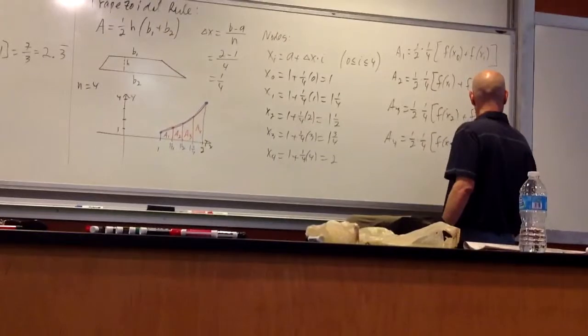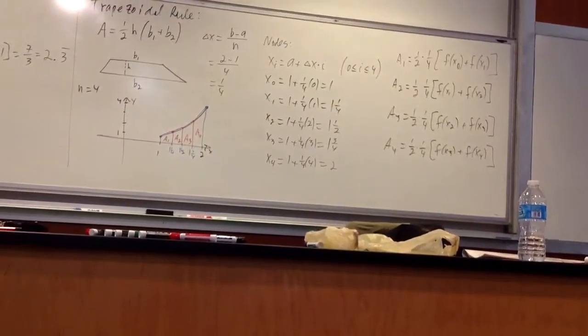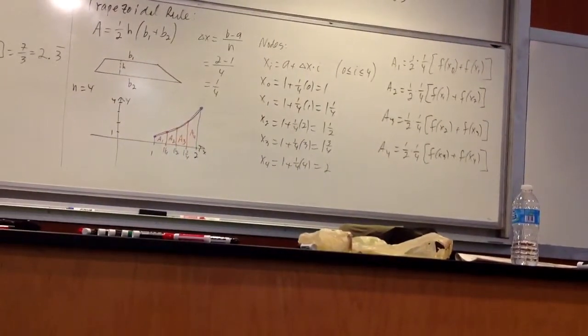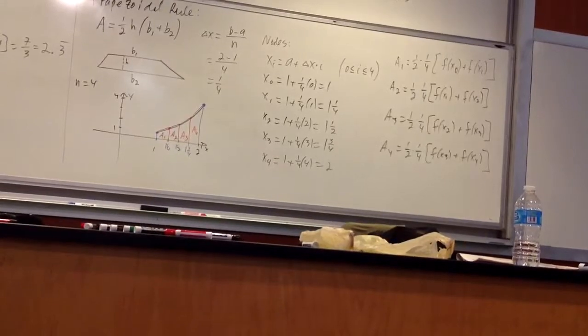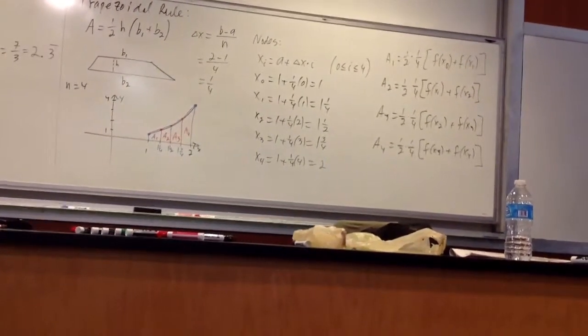So that would just literally be 1 plus 1 over 4. Yeah. One, one, and one fourth adding. That's one half. Right. One, one half. And then, are you with me? H is delta x, right? Yeah. H is delta x. Okay. Please ask questions.